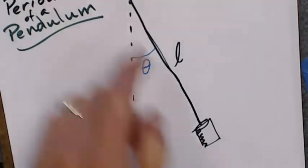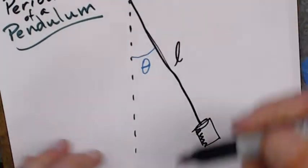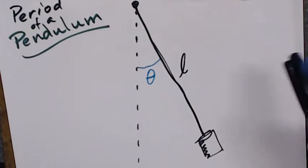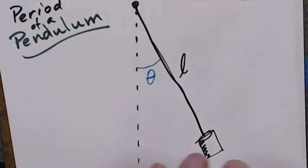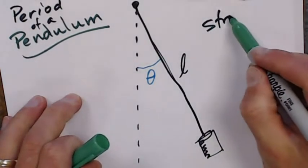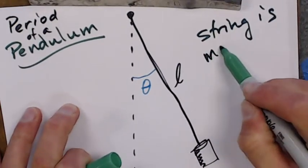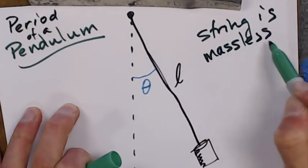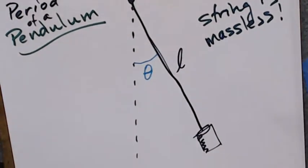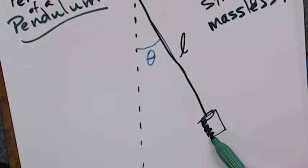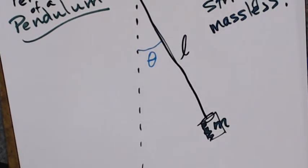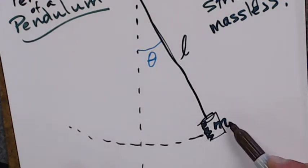So we are attached up here. Here we have a string of length L. The string is massless - that's very important. And then we have a mass down here on the end, some mass M, and it's swinging back and forth on this curved surface.